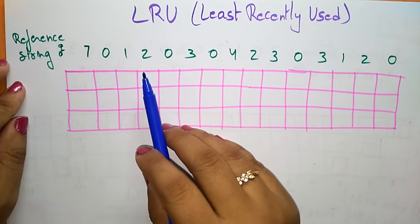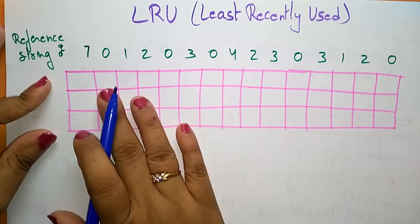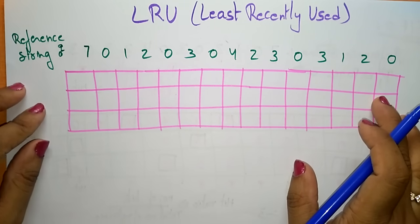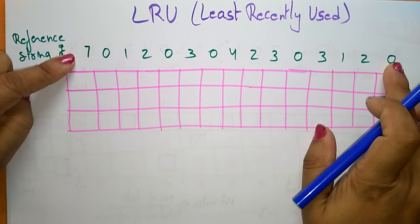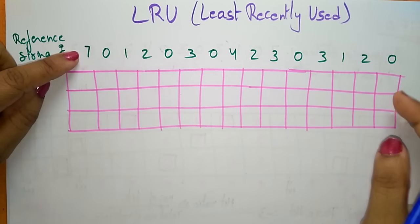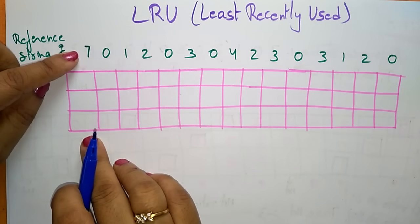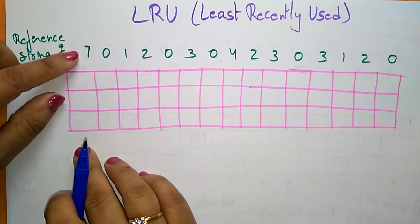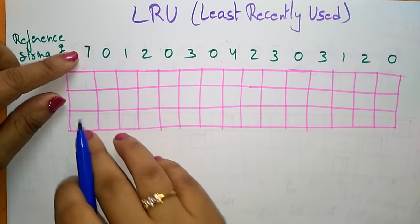So let's see how this algorithm will work. Starting, the main memory — that is the RAM — is having free frames, so everything is free. Now the CPU is demanding for pages from the reference stream. The first page demanded is page 7, but 7 is not present in the main memory. If the requested page is not present in the RAM, we call it a page fault. When a page fault occurs, the CPU transfers control to the operating system, which fetches the page from the disk and places it in the main memory.